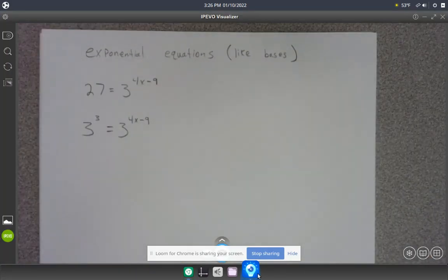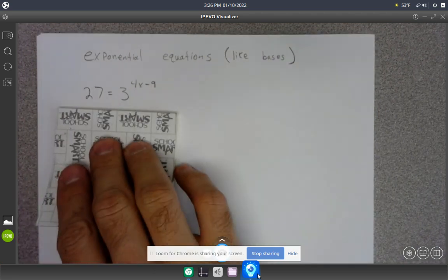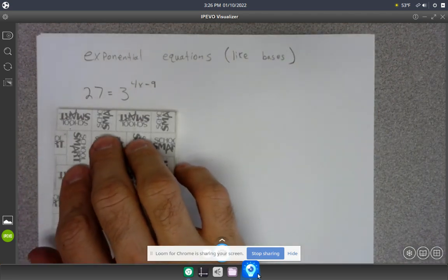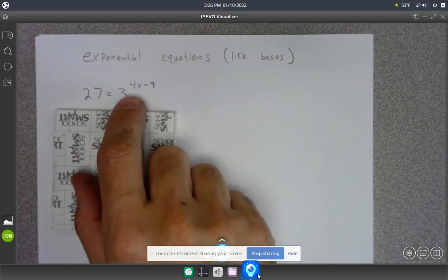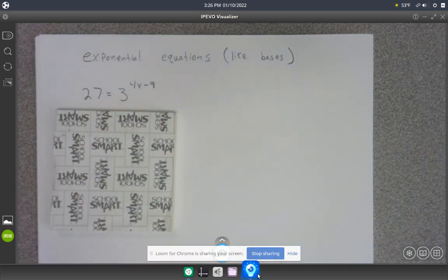Alright, so we've got an exponential equation here. 27 is equal to 3 to some power, or 3 to the 4x minus 9, and I'm trying to figure out what x is.